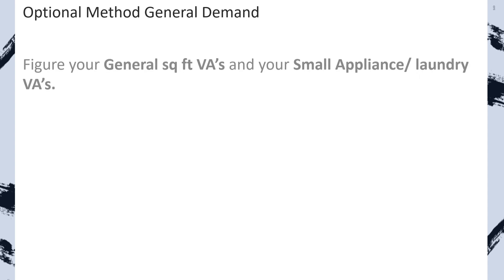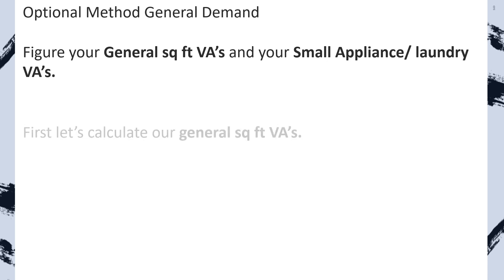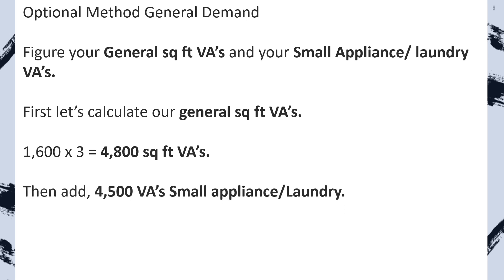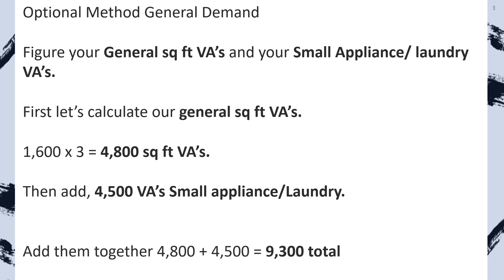Step one with any load calculation, whether standard or optional, is to get our general lighting demand. We do our square foot VAs just like before — take square footage, imagine a 1,600 square foot house, multiply by three VAs per square foot, that gives us 4,800. Now tack on our 4,500 for the two small appliance and one laundry circuits and total them all up. The only difference is we do not apply any demand factors at this point — we're going to apply a general demand factor later.